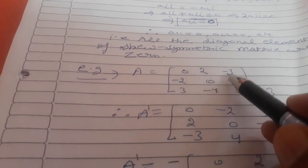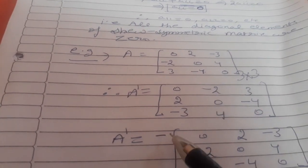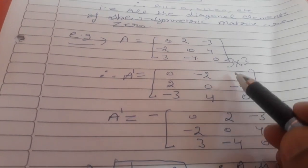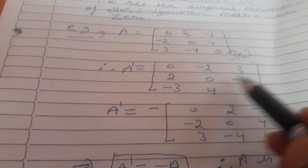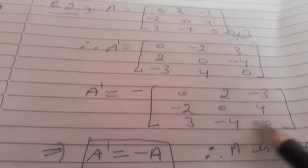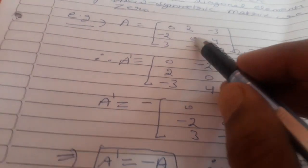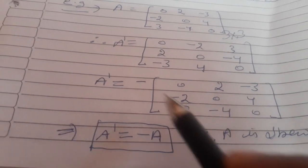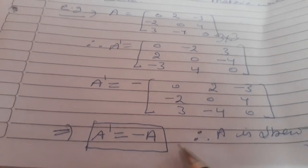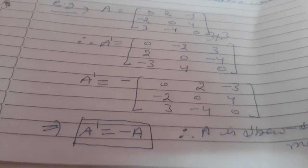The transpose gives elements 0, minus 2, minus 3 in the first row, and so on. Taking minus 1 common from the transpose matrix causes all signs to change inside: 0, 2, minus 3, minus 2, 0, 4, 3, minus 4, 0. This resulting matrix is the same as the original matrix A, so A transpose equals minus A, confirming it is a skew-symmetric matrix.